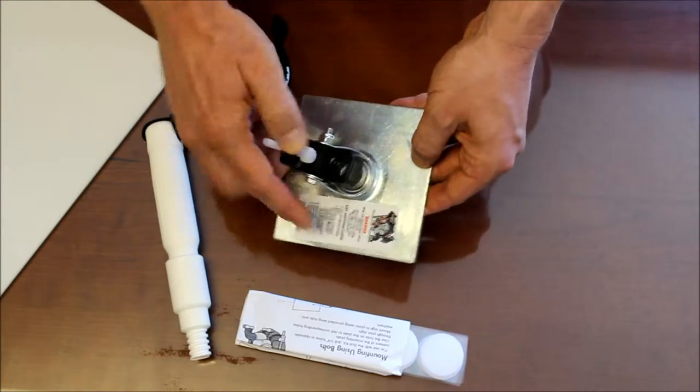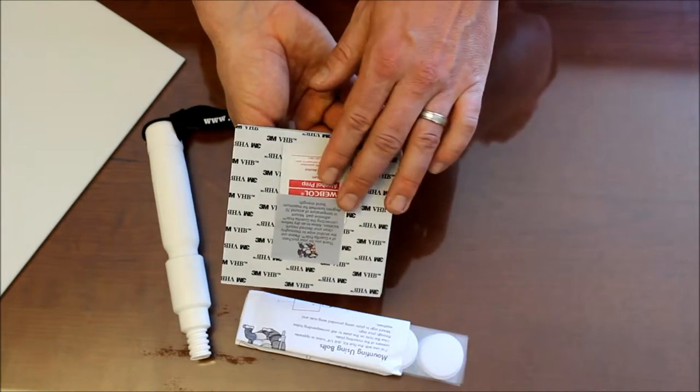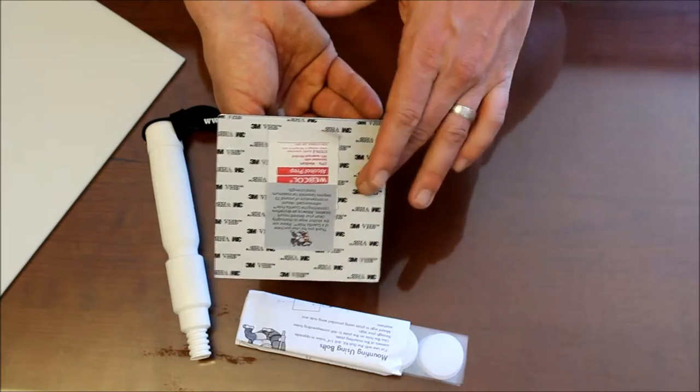Set the bag aside. You've got some instructions on the back of the head unit. On the front, you've got your alcohol swab and there's adhesive already applied.